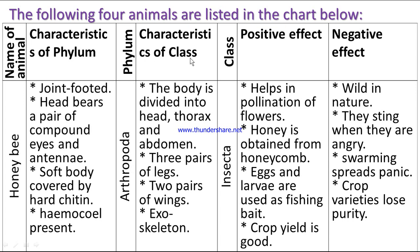Characteristics of class: the body is divided into head, thorax, and abdomen; three pairs of legs; two pairs of wings; exoskeleton. The class is Insecta. Positive effects: helps in pollination of flowers, honey is obtained from honeycomb, eggs and larvae are used as fishing bait, and crop yield is improved.